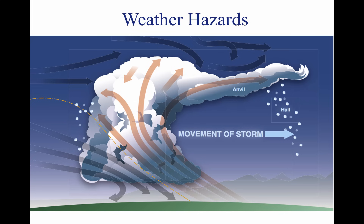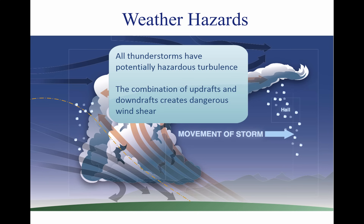Meteorologists have estimated that wind in such a vortex can exceed 200 knots. If the cloud does not reach the surface, it is a funnel cloud. If it touches a land surface, it is a tornado. An aircraft entering a tornado vortex is almost certain to suffer structural damage. Since the vortex extends well into the cloud, any pilot inadvertently caught on instruments in a severe thunderstorm could encounter a hidden vortex. Potentially hazardous turbulence is present in all thunderstorms, and a severe thunderstorm can destroy an aircraft.